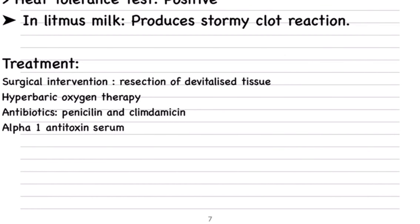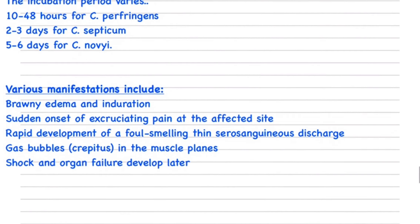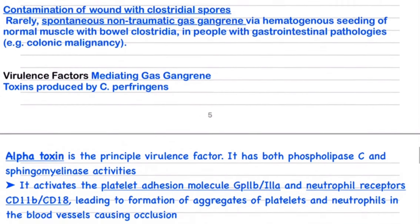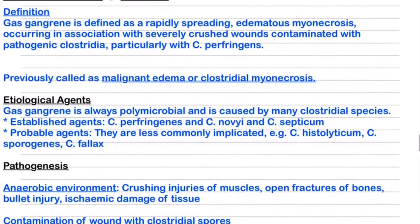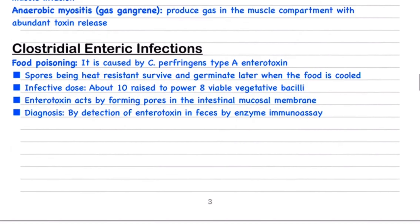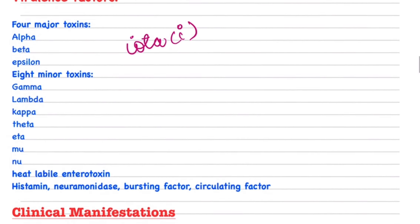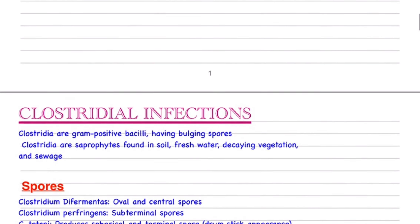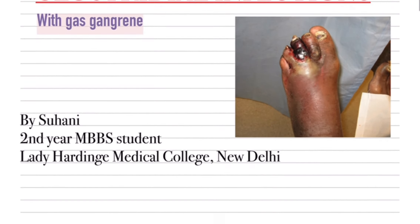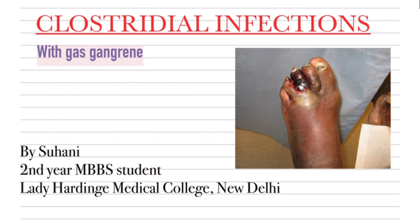For treatment: surgical intervention is done — all devitalized tissue is completely resected and removed. Hyperbaric oxygen therapy is also given, which provides high oxygen levels to kill the anaerobic bacteria. Antibiotics — penicillin and clindamycin — are also given, along with alpha-1 antitoxin serum. This was a short note on Clostridium infections and gas gangrene sufficient for university exams. If you liked the video, please like and comment, as that will help me decide whether to continue. Thanks for watching, bye bye.